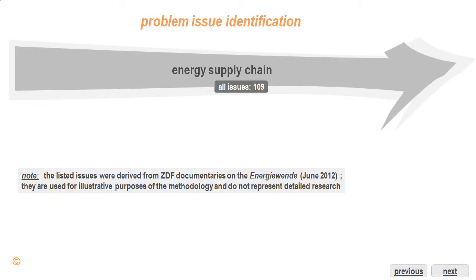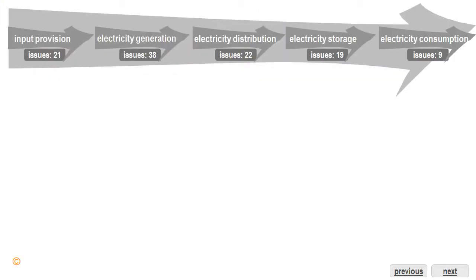The issues we worked with for the purposes of this presentation were derived from CDF documentaries on the Energivende. They are used for illustrative purposes of the methodology and do not represent detailed research. Here we have the energy supply chain overview with a total of 109 issues collected. By zooming into the supply chain, we can see its various links: input provision, electricity generation, electricity distribution, electricity storage, and electricity consumption, as well as the number of issues presented in the documentaries related to each of the links.